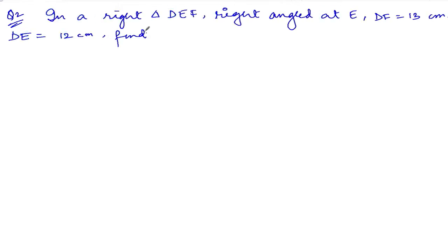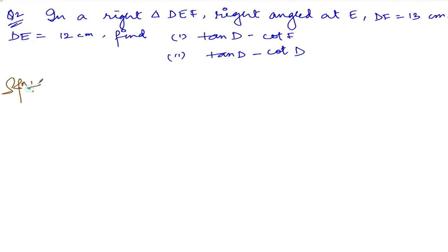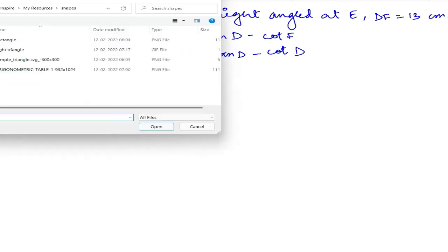Now we are doing exercise 10.2, question number two. The question says: in a right triangle DEF, right angle at E, DF is equal to 13 centimeters, DE is equal to 12 centimeters. Find: (i) tan D minus cot F, and (ii) tan D minus cot D. It's a little bit similar to the previous one.